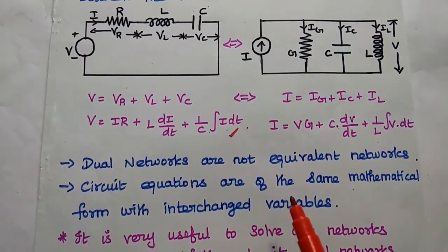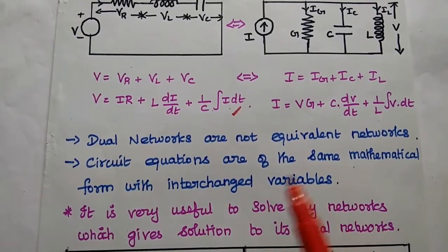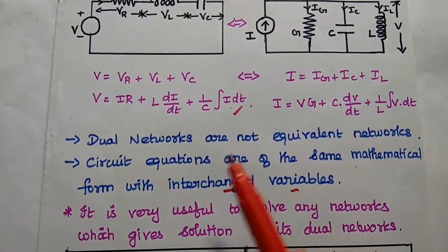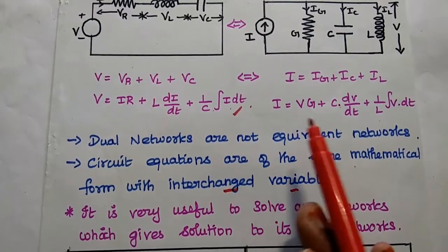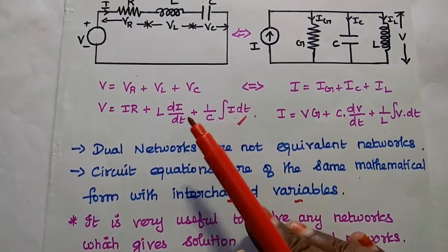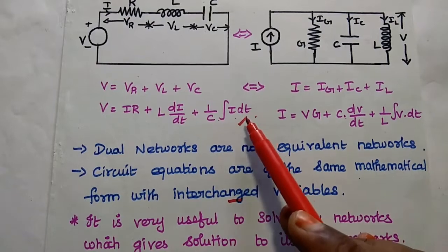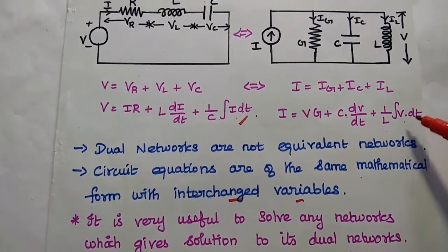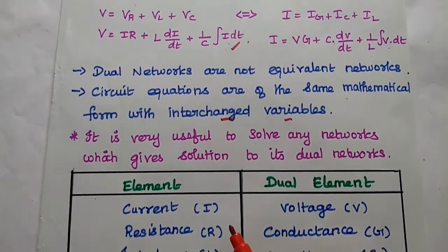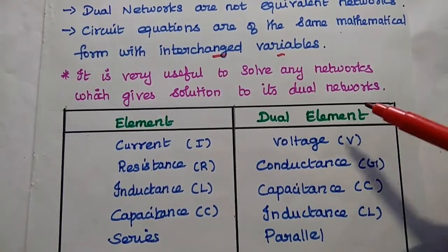The dual networks are not equal networks, but the circuit equations are of the same mathematical form with interchanged variables. Here we can have I times R; in the dual it is V times G. The next term is L times dI/dt; here it is C times dV/dt. Then (1/C) times the integral of I dt; here it is (1/L) times the integral of V dt. The mathematical operation is the same but the variables are interchanged. It is mainly used to solve any network, which also gives the solution for its dual network.